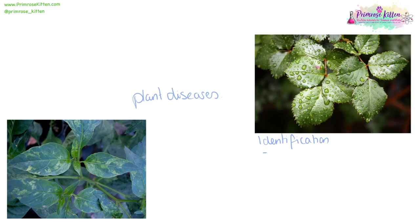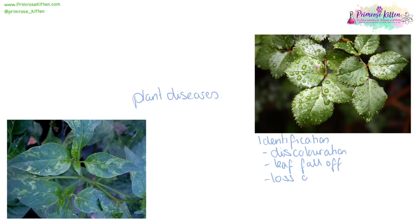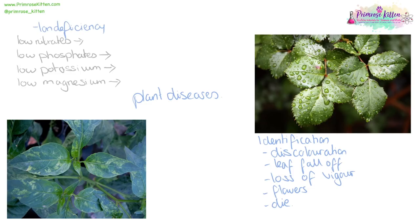Plant diseases can be identified in a number of different ways. This could be due to discolouration of the leaves — for example, the tobacco mosaic virus causes the leaves to go coloured, or there could be a black colour developing as in rose black spot. The leaves could fall off, there could be a loss of vigour — which basically means it falls over and looks pathetic — or the flowers could develop wrongly, not develop at all, or the plant could die. However, a poorly looking plant doesn't necessarily have a disease; it might have an iron deficiency.